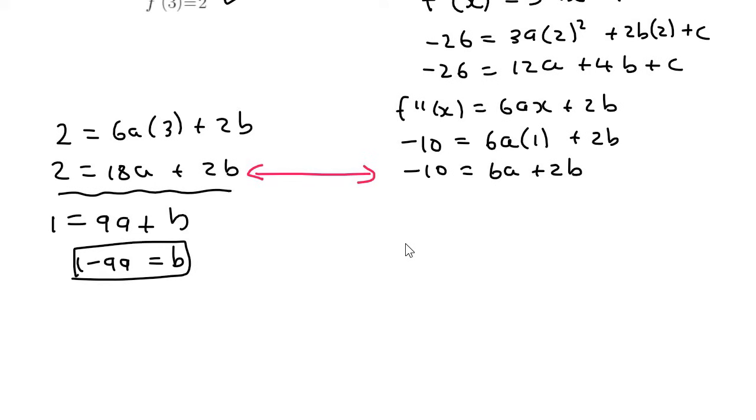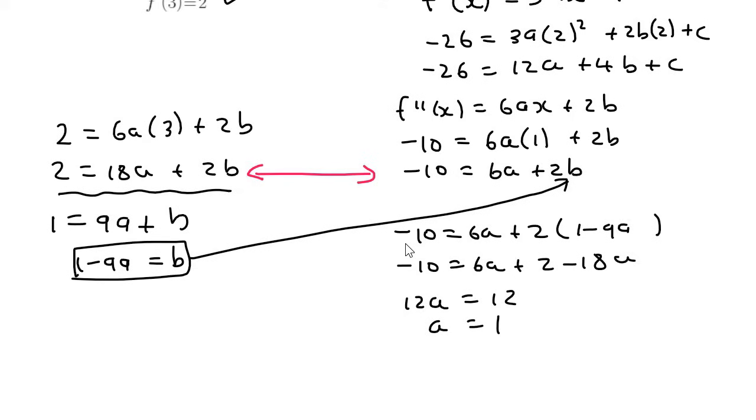I'm then going to take that and put it in the place of b over there. So I'm going to end up with minus 10 equals 6a plus 2. Brackets, always a good idea. 1 minus 9a. I'm then just going to multiply out quickly. I'm then going to solve for a. Ah, a becomes 1.